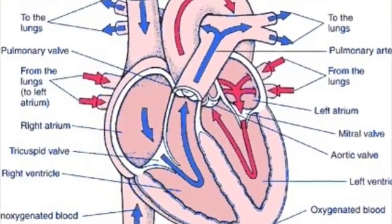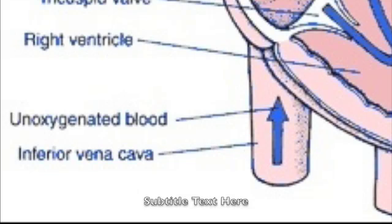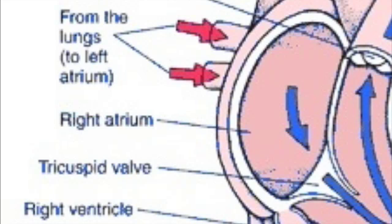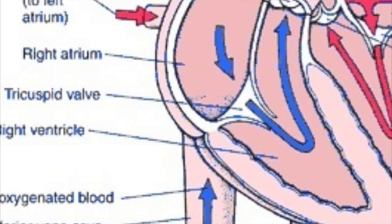From the systemic circuit, blood enters into the superior vena cava and the inferior vena cava. Next, it flows into the right atrium, a holding area before it continues on.